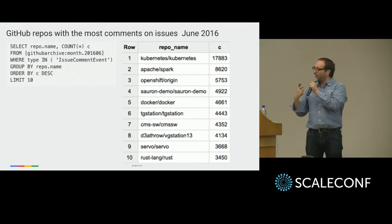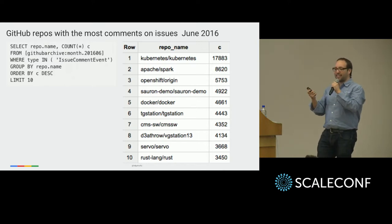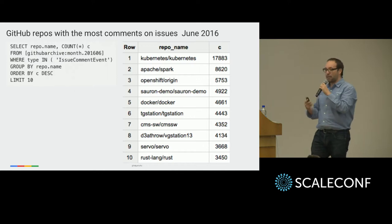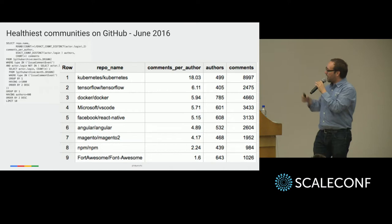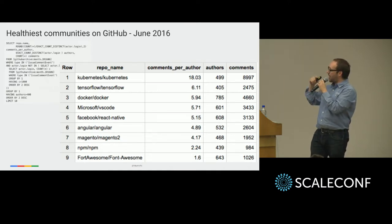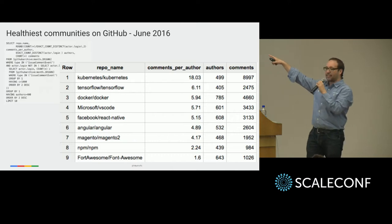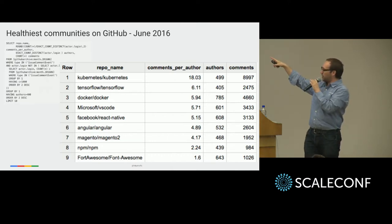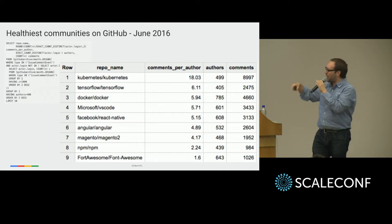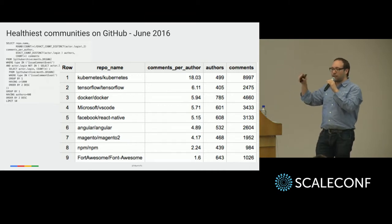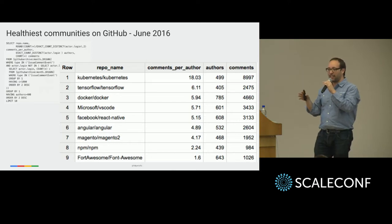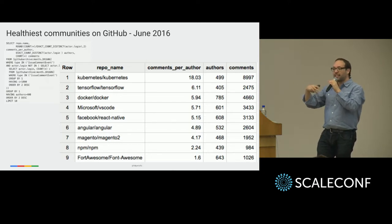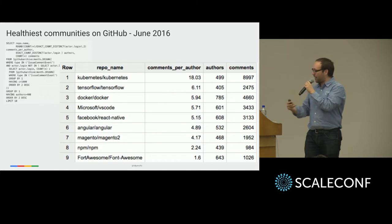It happens. So you don't want to just count — you might want to normalize by how many people were giving comments. In this new ranking, you can see that Kubernetes had around 500 authors. If you divide the number of comments by the number of authors, you get that each one, during this month, wrote around 18 comments. That's huge — a lot of participation, a very healthy community.